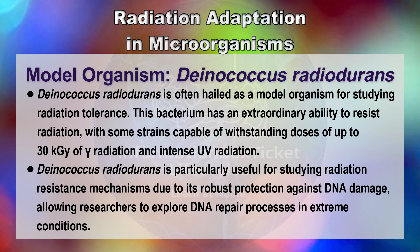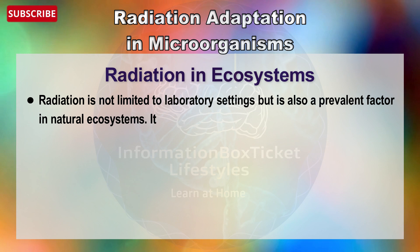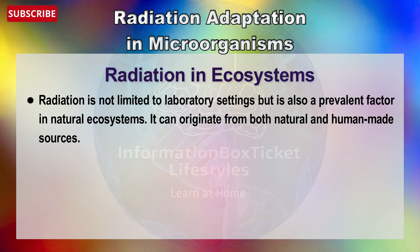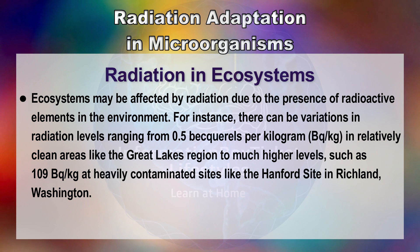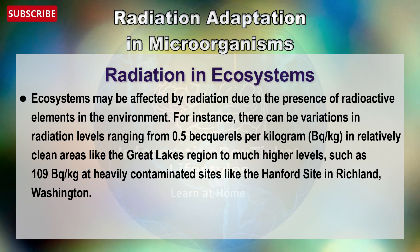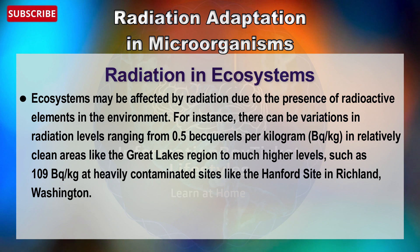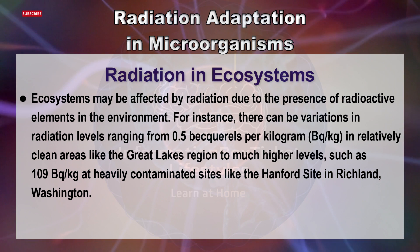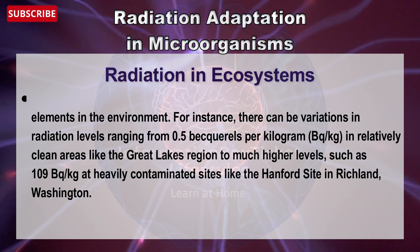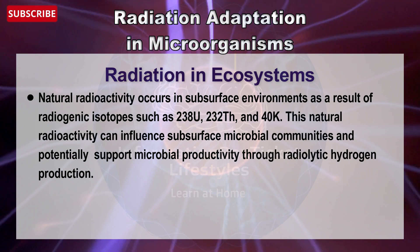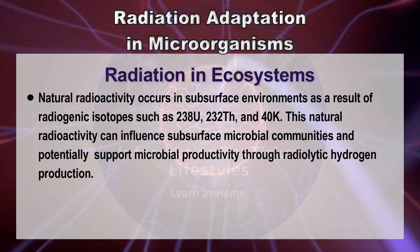Radiation is not limited to laboratory settings but is also a prevalent factor in natural ecosystems, originating from both natural and human-made sources. Radiation levels can range from 0.5 becquerels per kilogram in relatively clean areas like the Great Lakes region to as high as 109 becquerels per kilogram at highly contaminated sites like the Hanford Site in Richland, Washington. Natural radioactivity occurs in subsurface environments as a result of radiogenic isotopes such as ²³⁸Uranium, ²³²Thorium, and ⁴⁰Potassium, which can influence subsurface microbial communities and potentially support microbial productivity through radiolytic hydrogen production.